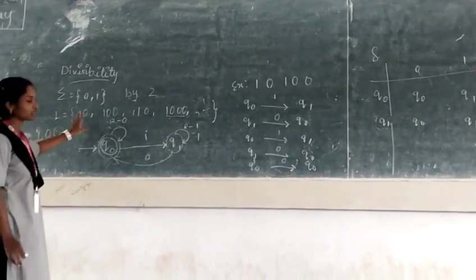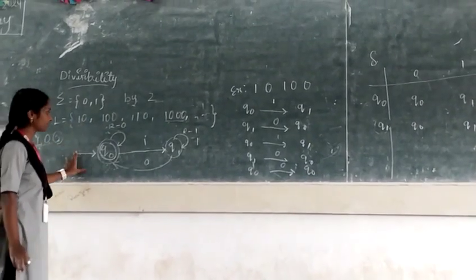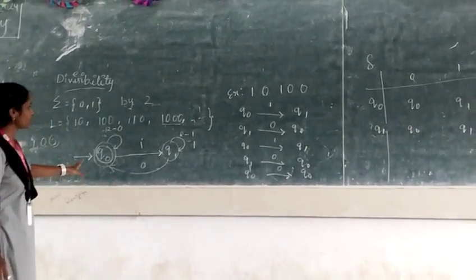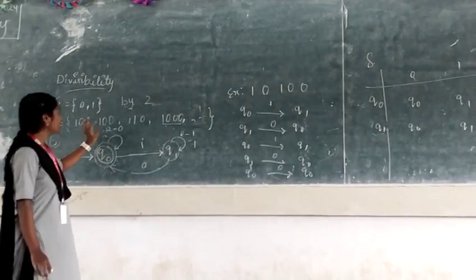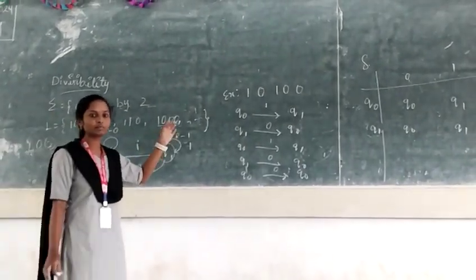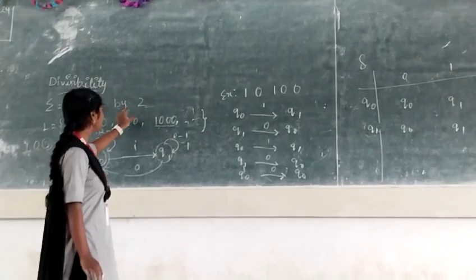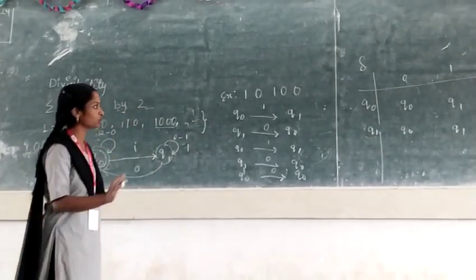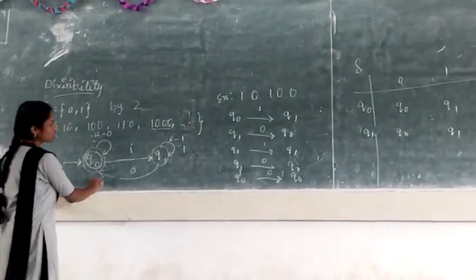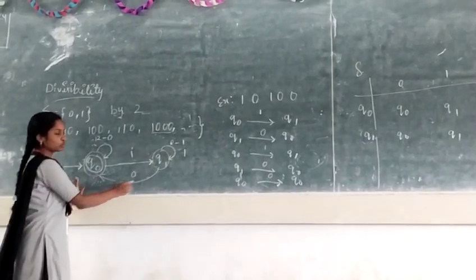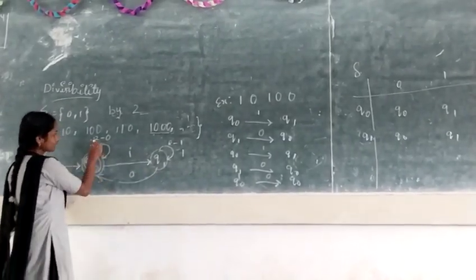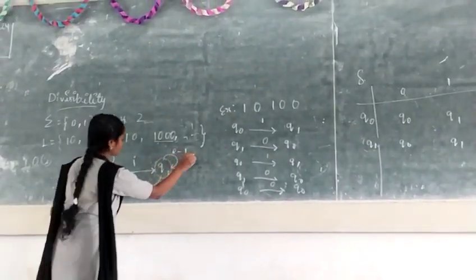After completion of the language, we have to construct the DFA. Constructing DFA is based on the remainders. When we divide the number by two, then we have two remainders. So we also have two states. For our two states, this is remainder zero state, and this is remainder one state.